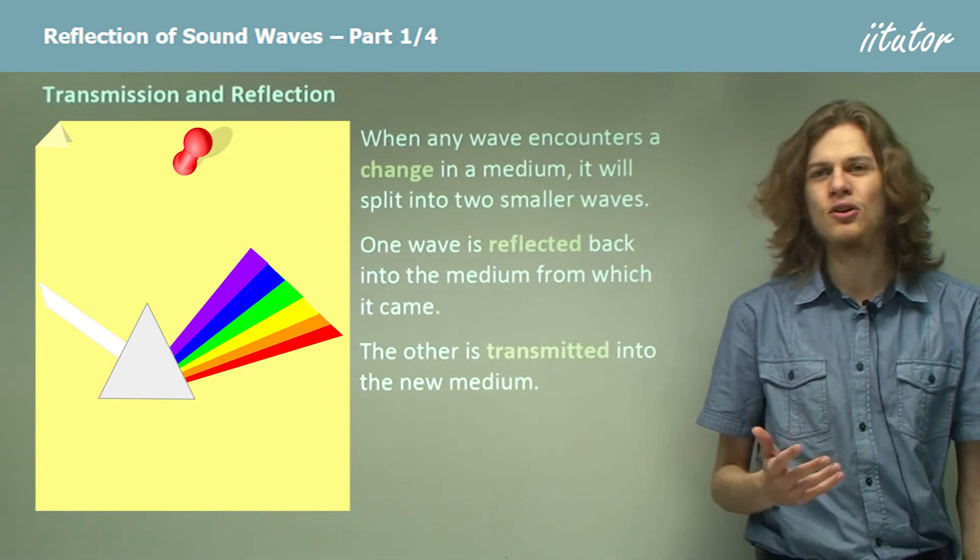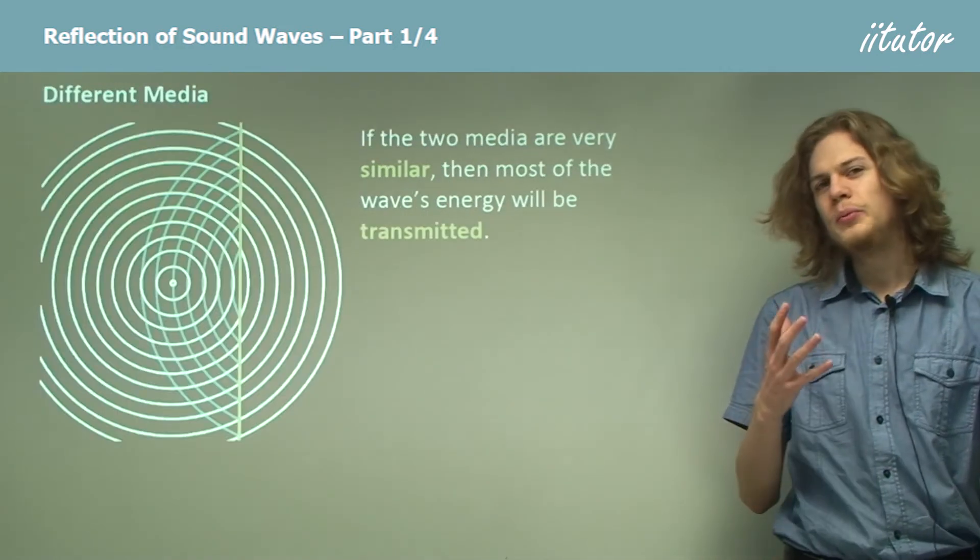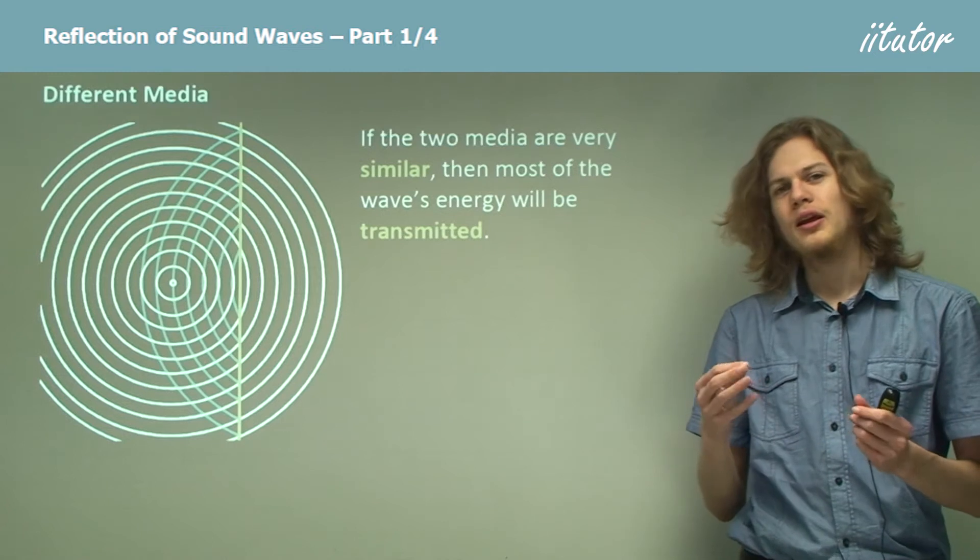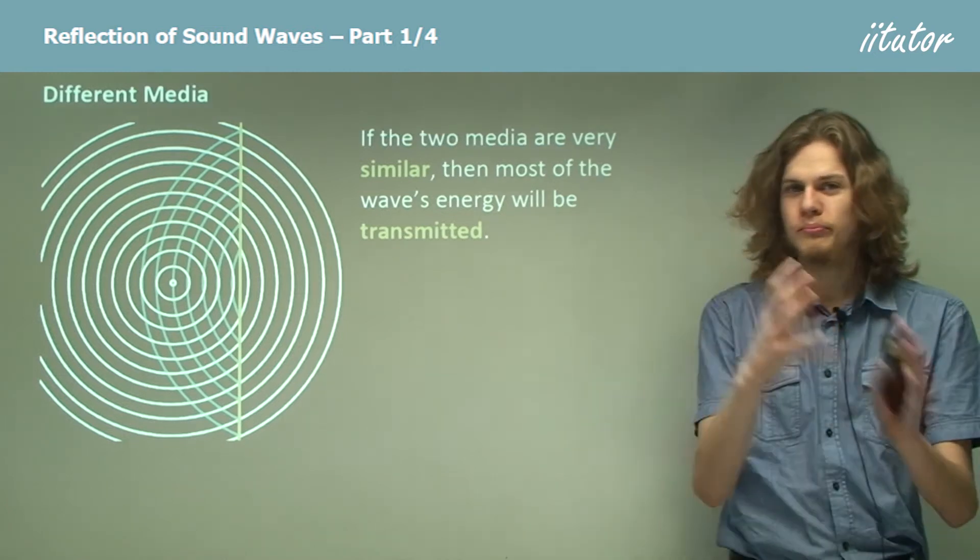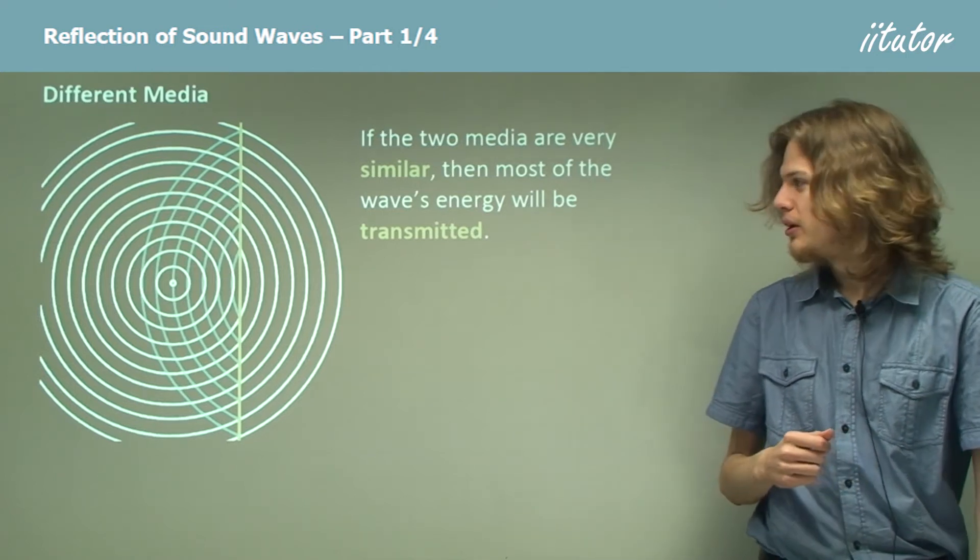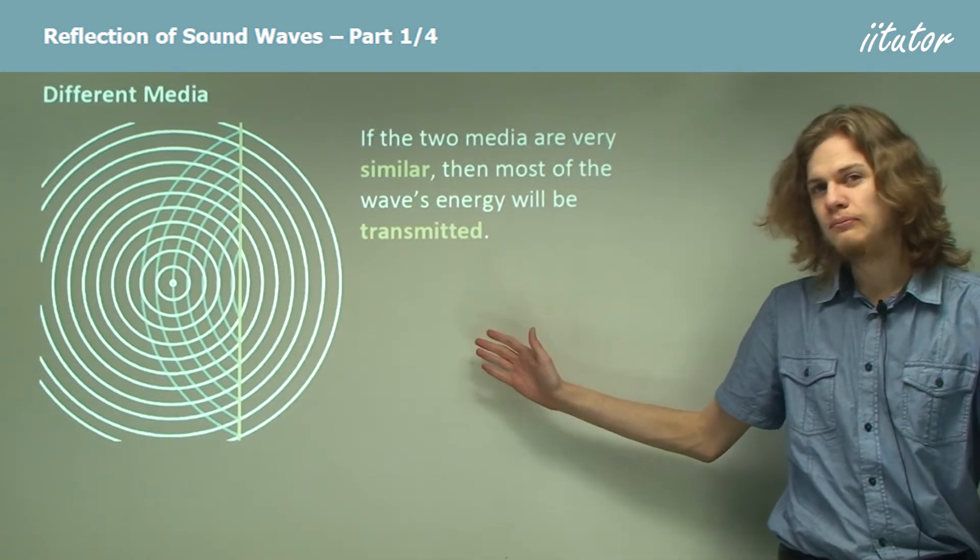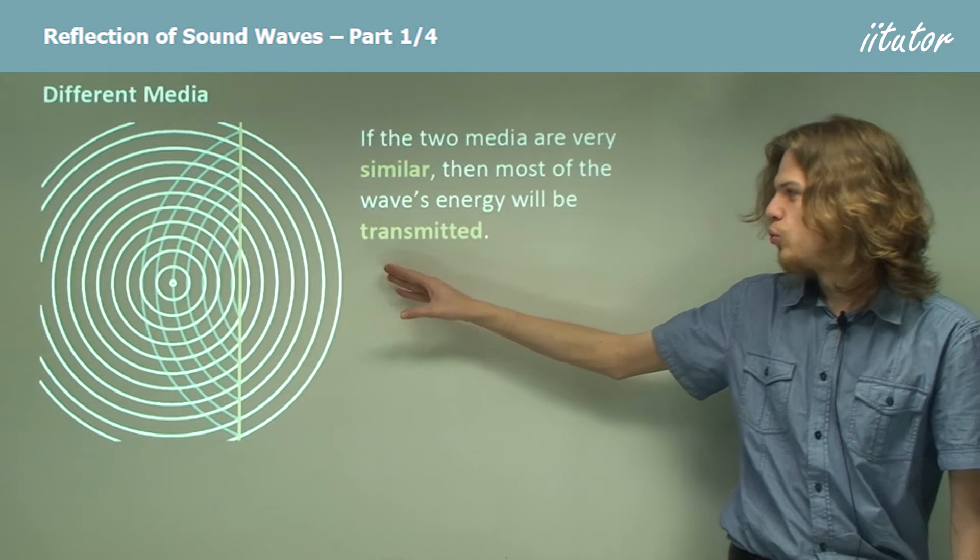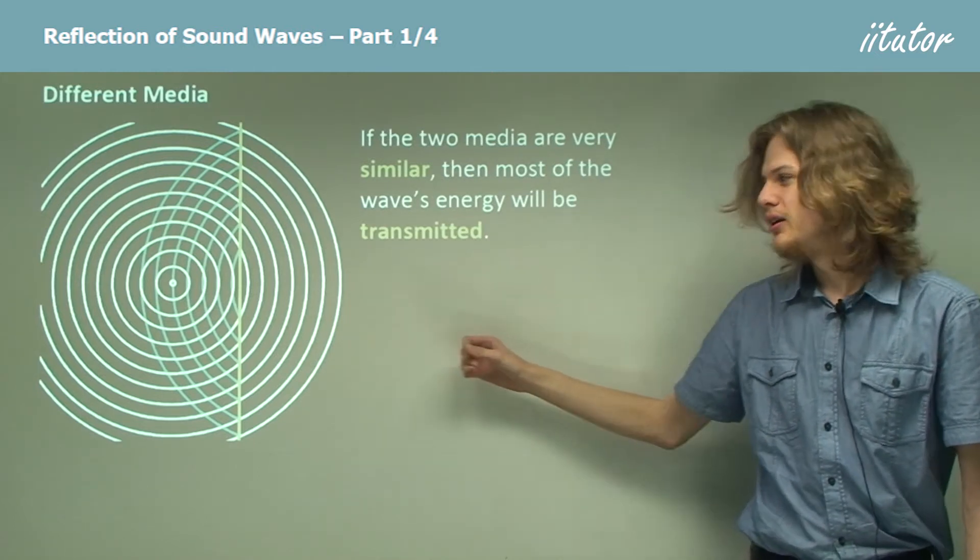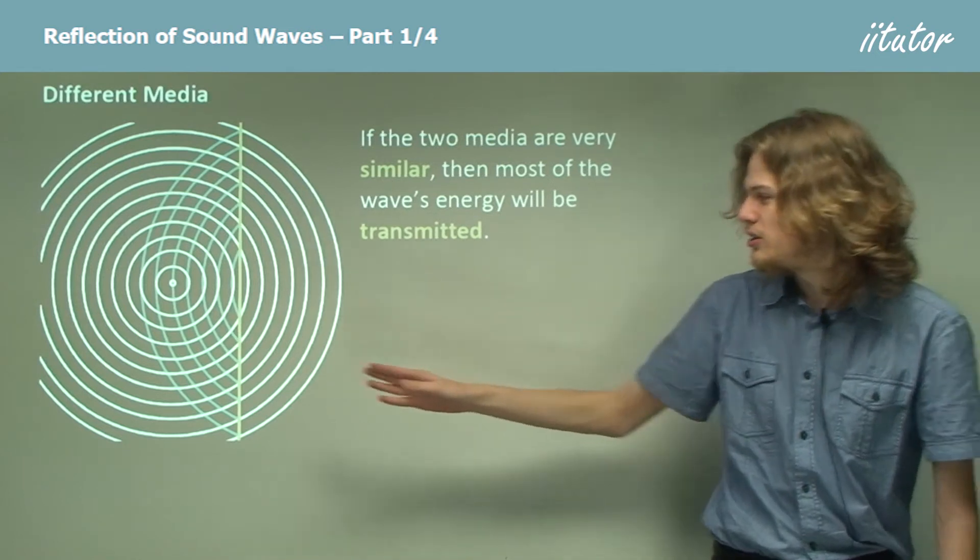So if the two media are very similar and there's not much difference between the two media, then most of the wave will just go straight through into the new medium as if nothing had happened. So in this diagram over here it would be the white part of the wave to the right of the yellow line. So we can see that the wave has just continued straight on through the boundary.